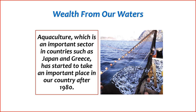2. Geographical distribution — aquaculture facilities are distributed across different regions of Turkey, with a significant presence along the Aegean and Mediterranean coasts. These areas provide suitable conditions for marine aquaculture. 3. Production methods — aquaculture in Turkey utilizes different production methods, including marine cages, land-based ponds, and recirculating aquaculture systems (RAS). These methods aim to optimize production efficiency and environmental sustainability.